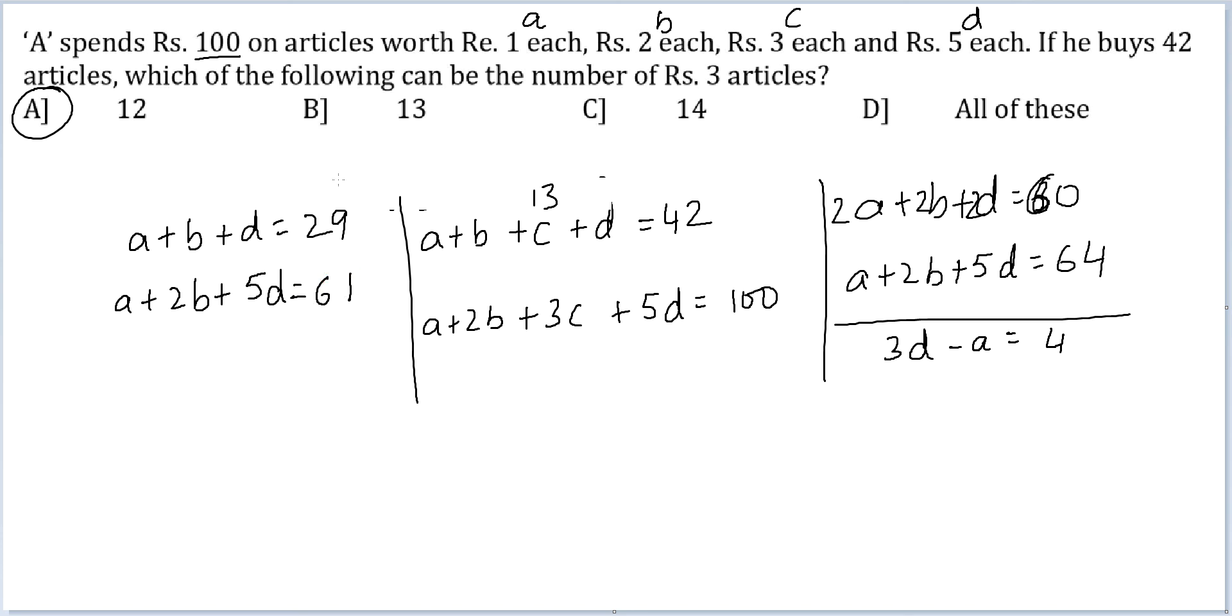This should be 61. Again, twice this: 2A plus 2B plus 2D is equal to 58. Can I make a case out of this? I get 3D minus A is equal to 3.